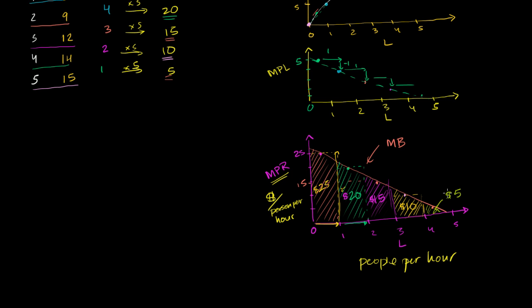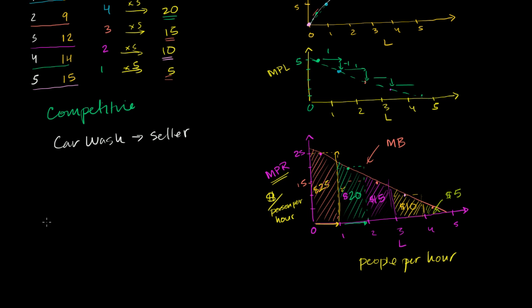This is just telling us the revenue we're getting, but it's not telling us what is the optimal or rational number of employees to hire. To do that, we have to think about the cost per employee — the marginal cost we're actually incurring. This is a competitive firm — competitive in the car wash market as a seller, and also a competitive buyer in the labor market. These are two different markets.